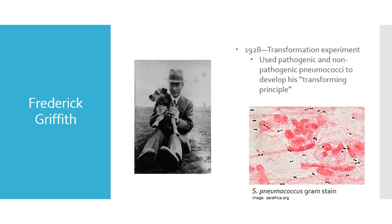Next up we have Frederick Griffith. In 1928, he began experimenting with pneumococci strains in mice, using one pathogenic strain and one non-pathogenic strain, and from the results determined that transformation was actually possible. Here we have a picture of Strep pneumo gram stain — you can see the gram-positive cocci in pairs with a lancet shape, a hint for your micro course — and an image of Frederick Griffith posing with his dog.